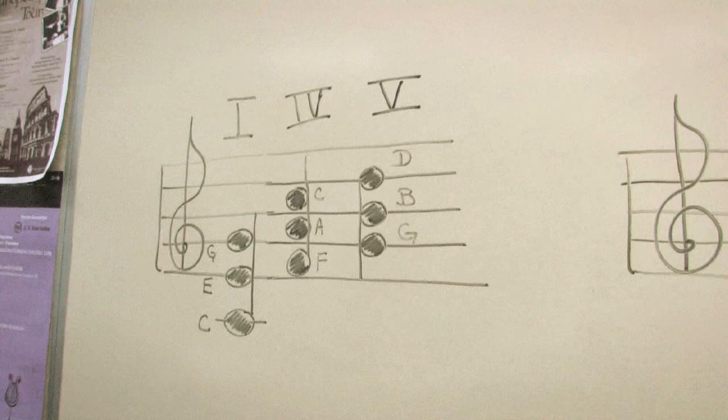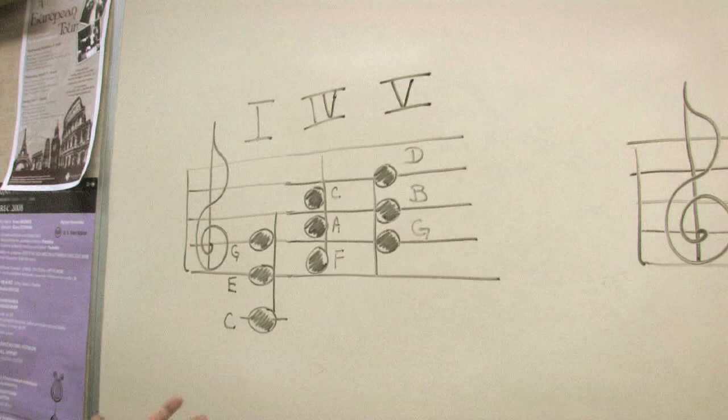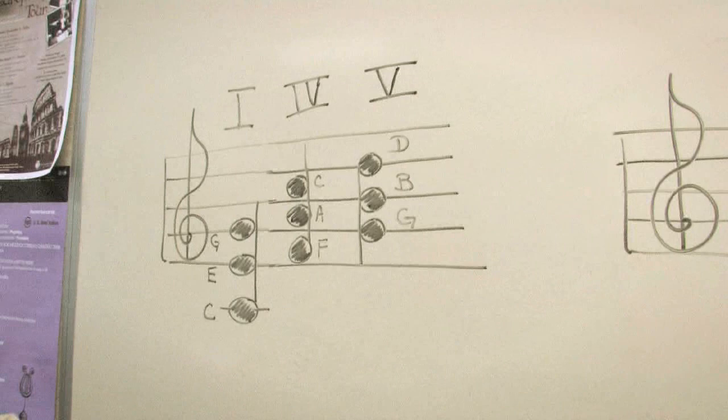And the fifth degree in the key of C will be G. You will spell it G, B, D, every other one. In music, you will see either the chord will be on the lines or the chord will always be in the spaces.